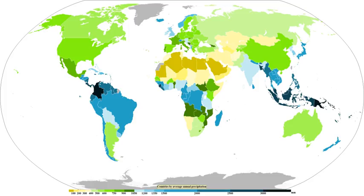The dew point is the temperature to which a parcel must be cooled in order to become saturated and condense to water. Water vapor normally begins to condense on condensation nuclei such as dust, ice, and salt in order to form clouds. An elevated portion of a frontal zone forces broad areas of lift, which form cloud decks such as altostratus or cirrostratus. Stratus is a stable cloud deck which tends to form when a cool, stable air mass is trapped underneath a warm air mass.